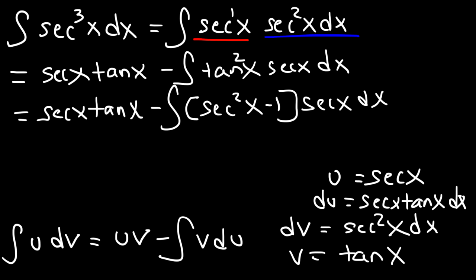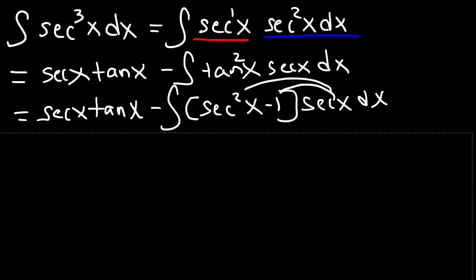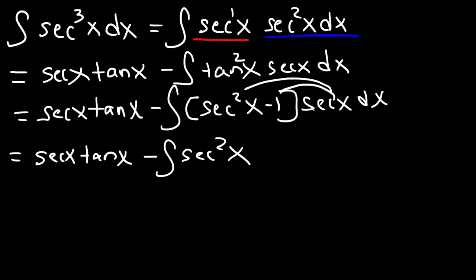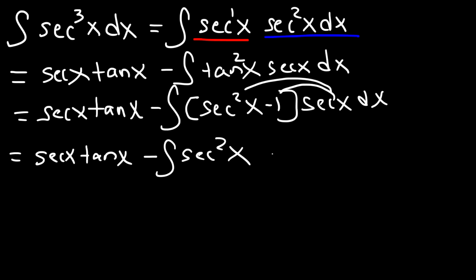Let's distribute secant to secant squared minus 1 and split the integral into two separate integrals. So we have secant x tangent x minus the integral of secant squared x. And then negative 1 times secant times another negative gives positive secant x. Note: secant times secant squared is not secant squared — it's secant cubed, so that should be a 3.